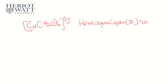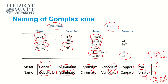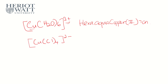Next, let's name [CuCl4]²⁻. Check the charge — it is a negative complex, so the copper name changes to cuprate. We have four Cl, so we start with tetra; Cl is chloro, giving tetra-chloro. Then cuprate. The full name is tetra-chloro cuprate(II), indicating the 2+ charge of the ion.